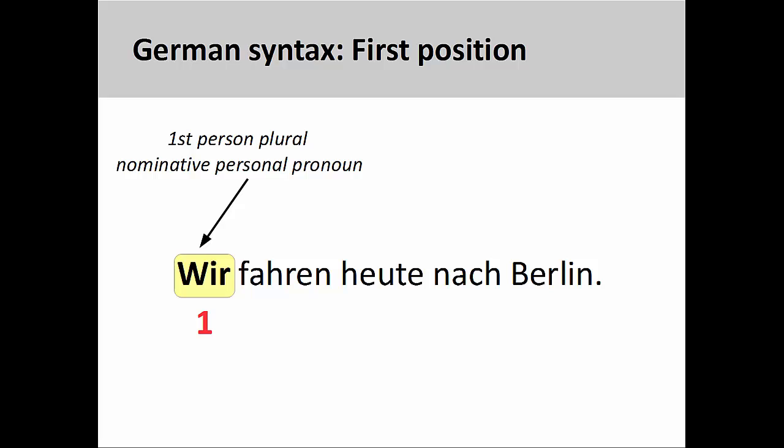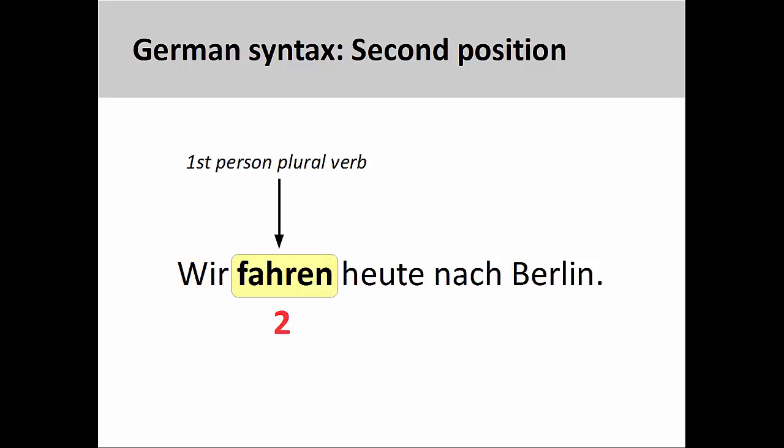German has a similar syntax, although we will see toward the end of this presentation that it is more flexible than English. Here the subject is the first person plural nominative personal pronoun, wir, we. There is no progressive construction in German, so only one verb, the first person plural form of fahren, to drive, is in the second position.